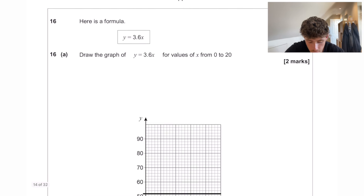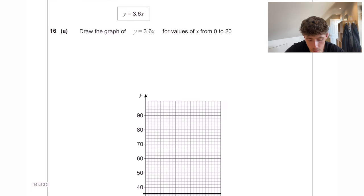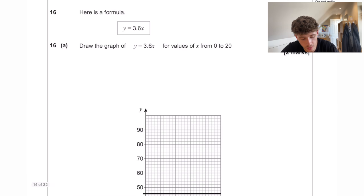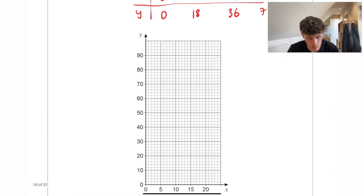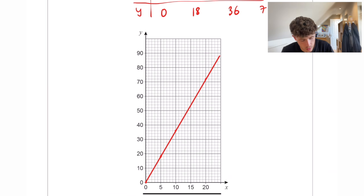Here is a formula. Draw the graph of y equals 3.6x from 0 to 20. So you could here sub in the values of x. So if you had x and y, 0, 5, 10, 20, for example. So that's 3.6 times 0 is going to be 0. 3.6 times 5 is going to be 18. 3.6 times 10, 36, and 72. So we can plot all of those. So 0, 0, it all works out nicely.